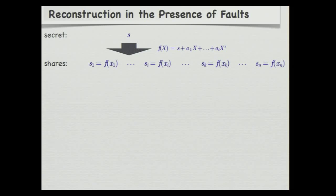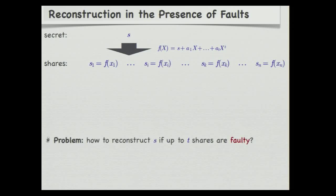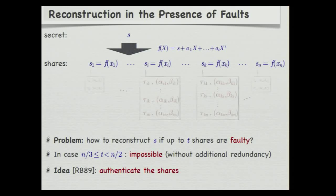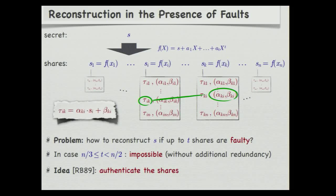If you do a multiparty computation, at some point players have to reconstruct the shared secret but some of the shares are incorrect. In the setting where t is just below n over 2, this is not possible without additional redundancy on the shares. It was shown by Ben-Or and Benog in 1989 how to add additional redundancy to enable the reconstruction of a shared secret in the presence of faulty shares — essentially by pairwise authenticating the shares. If we append to every share a list of authentication tags and a list of authentication keys — specifically for every pair of shares, an authentication tag to share S_I and the corresponding verification key to share S_K — then this works out.